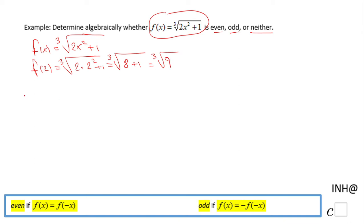Similarly, I'm going to do f(-2), and I'm going to get cubic root of 2 times (-2)² plus 1, and that becomes cubic root of... negative 2 squared is positive 4, times 2 is 8, so the same 8 plus 1. So we get the same value, cubic root of 9.